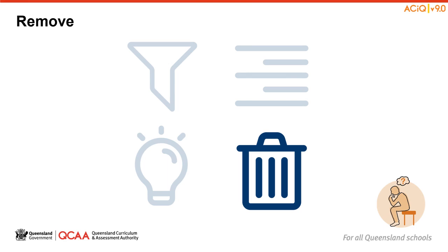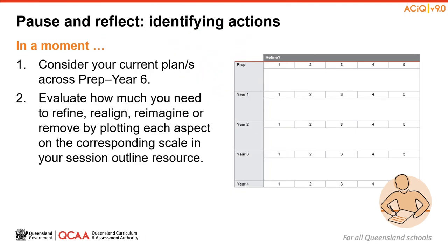Finally, are there some aspects that it will be necessary to remove in order to meet the requirements of English version 9 in your context? You may wish to use the tables in your session 2 outline to plan your next steps. Consider your current Teaching, Learning and Assessment plans and use the scale, where 5 equals strongly agree, to evaluate how much you need to refine, realign, reimagine or remove material from your current plans. Record some notes where you have identified particular actions. Pause the session recording and take some time to determine where the majority of your work will be as you plan for version 9 of the Australian Curriculum, English.